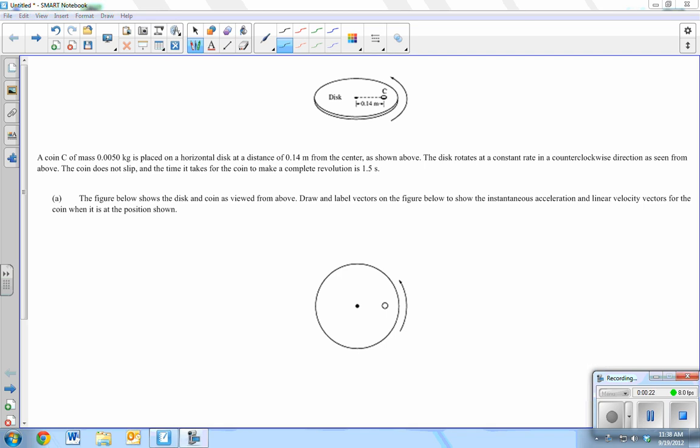The figure below shows the disc and the coin view from above. Draw and label the vectors. What's a vector? It's an arrow which has size and direction, not necessarily a force. Anything can be a vector, as long as it has a direction associated with it. So a displacement vector, or a velocity vector, acceleration vector, things like that.